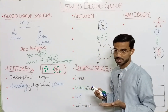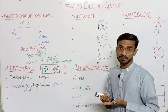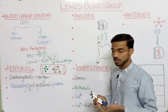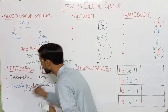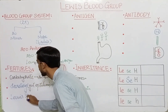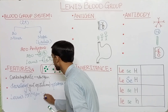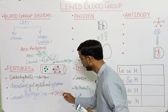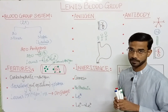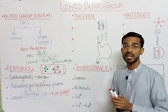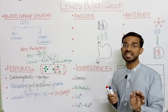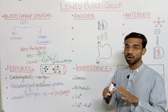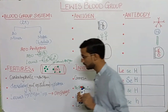If we store the blood, the Lewis antigen present on the RBCs will be lost — Lewis antigen is lost on storage. So if we want to check the presence of the Lewis antigen, we have to use fresh blood; otherwise you cannot detect the Lewis antigen on stored blood.